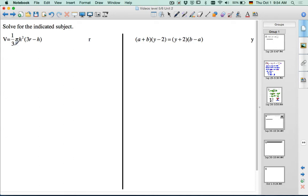There are two different strategies. You could divide both sides by 1/3 π h², or multiply by 3 and divide by π and divide by h² to get rid of this front part first, and then add h and divide by 3. Or we could distribute this 1/3 π h² into the brackets, and then try to solve for r that way. Let's see if one turns out easier than the other.